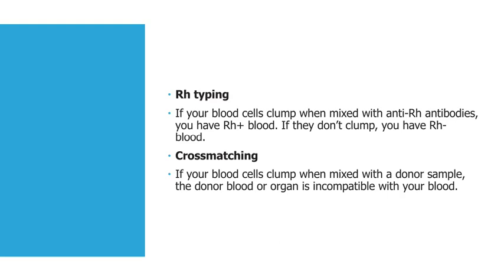RH typing results: if your blood cells clump when mixed with anti-RH antibody, you have RH positive blood. If they don't clump, you have RH negative blood. Cross matching results: if your blood cells clump when mixed with the donor sample, the donor blood or organ is compatible with your blood.